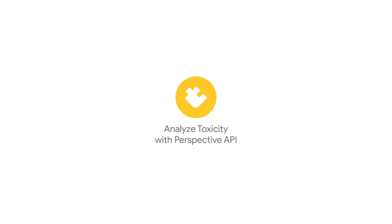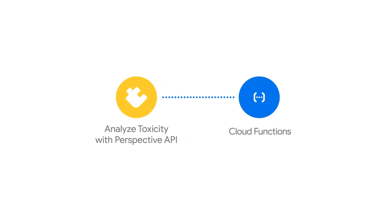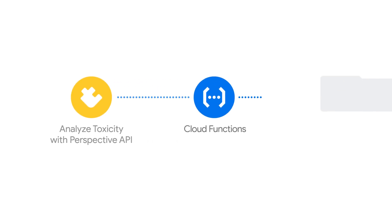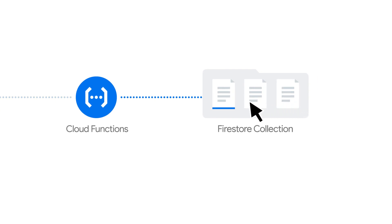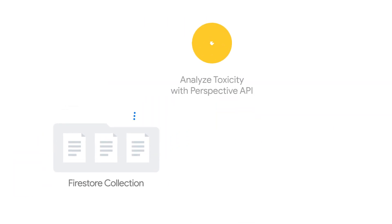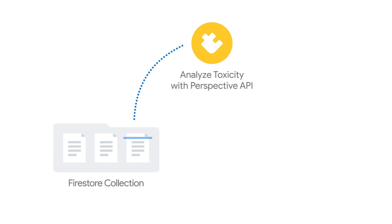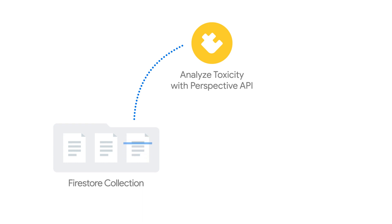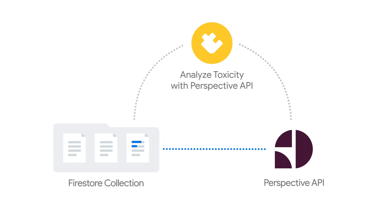Behind the scenes, the Analyze Toxicity with Perspective extension uses a cloud function to look for incoming documents in a Firestore collection that you specify. When a user posts a new comment, you just create a new document in this collection and use it to store their comment. The extension will then read the user's comment from the document, send it to the Perspective API for analysis, and write the results of the analysis back into the same document.